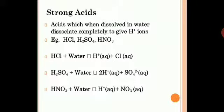You have some chemical equations here that you need to write down in your notebook. What are strong acids? Acids when dissolved in water dissociate completely to give H+ ions — that means you get the maximum amount of H+ ions. Strong acids include HCl (hydrochloric acid), H2SO4 (sulfuric acid), and HNO3 (nitric acid), because when they dissolve in water they dissociate completely to give H+ ions.